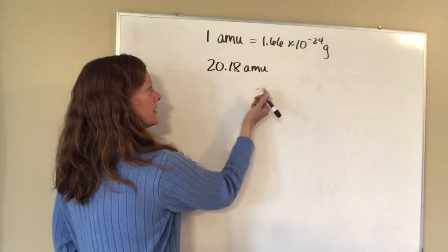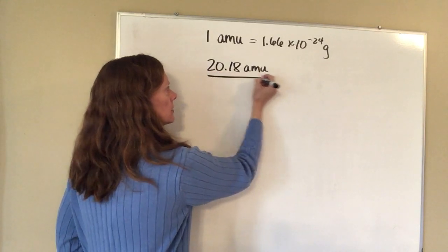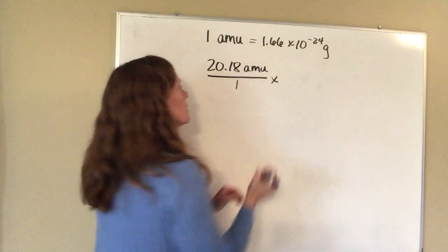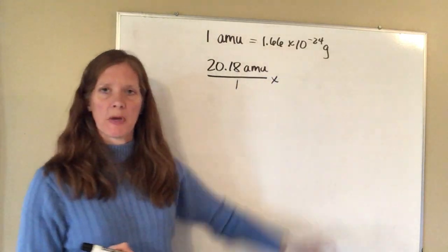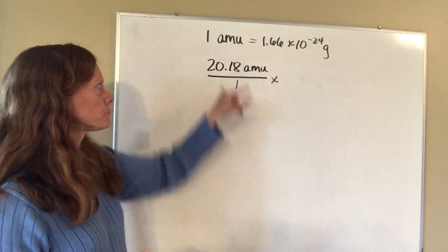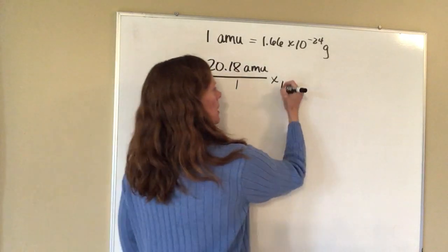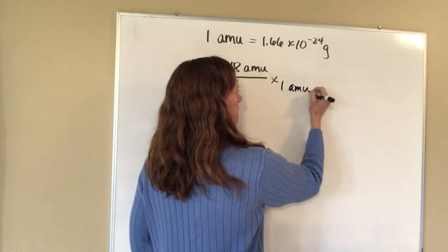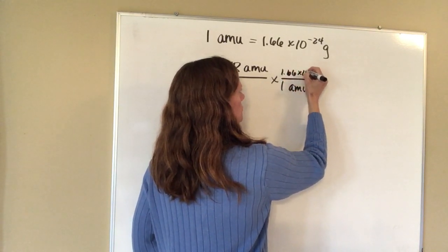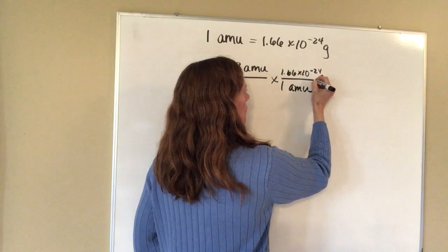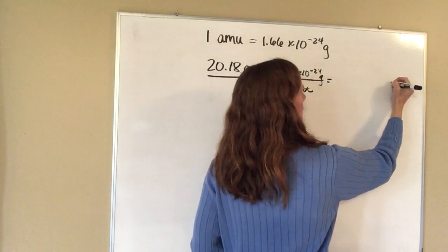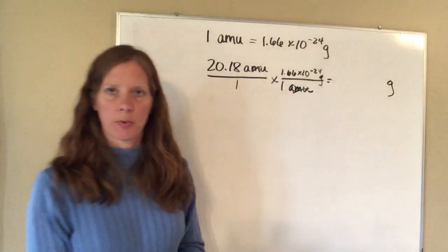You're going to take the 20.18 AMUs and put it over 1. Then you take this relationship and put it into a conversion factor so the AMUs will cancel — 1 AMU goes on the bottom and 1.66 times 10 to the minus 24 grams goes on the top. So your AMUs will cancel out and you're going to be left with units of grams.